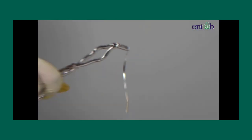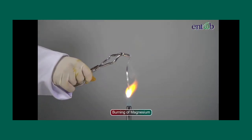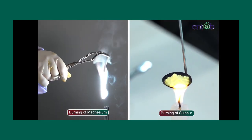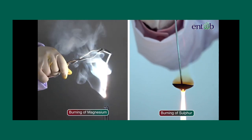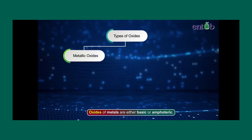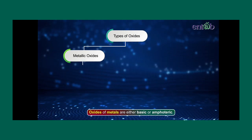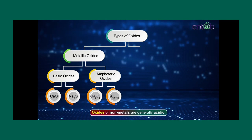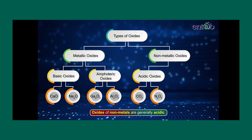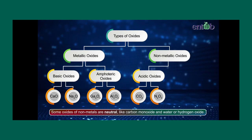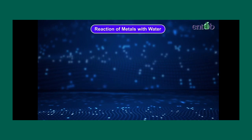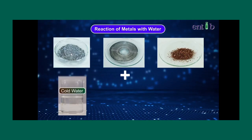In our previous module we learned about the reaction of metals and non-metals with air or oxygen. We now know that the oxides of metals are generally either basic or amphoteric, while the oxides of non-metals are generally acidic, though we do have some neutral oxides as well. Let us now learn how metals behave with cold water, hot water, and steam.